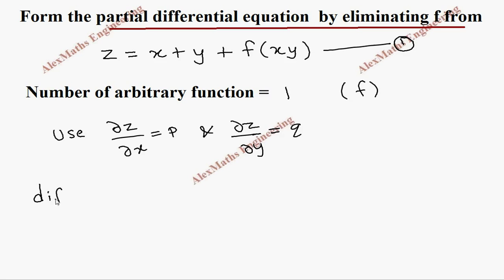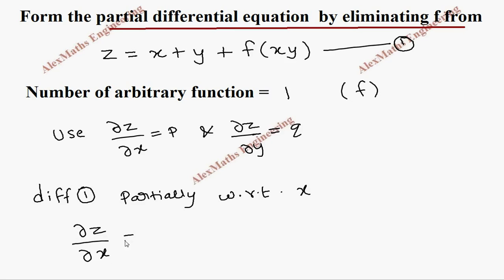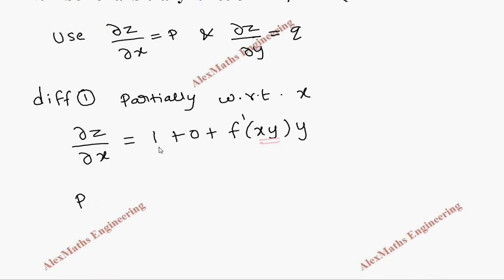We are going to differentiate this partially with respect to x. So dou z by dou x equals — the x derivative is 1. Since we do the partial derivative with respect to x, y is treated as a constant. f derivative is f dash, and the inner function is written as it is. The derivative of the inner function: y is constant and x derivative is 1. Rearranging, P minus 1 equals f dash of xy times y. This is our second expression.